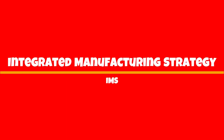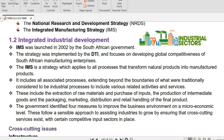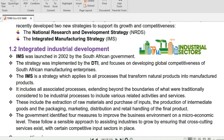The Integrated Manufacturing Strategy, IMS, was launched in 2002 by the South African government. It was mentioned earlier together with the National Research and Development Strategy, NRDS, as one of the two strategies launched to support growth and competitiveness of South African industries.